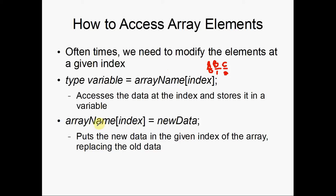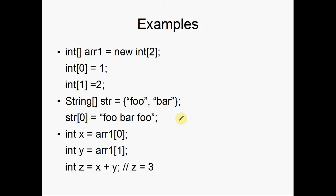If you want to change something at a certain index, it's simply the array name, then the index inside square braces, then equals, and then the new data. Here are some examples you can look at yourself.